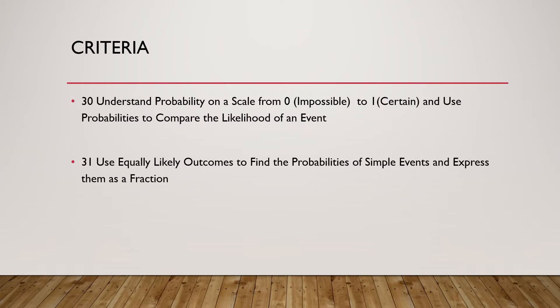NXCL has probability under two areas of criteria: understand probability on a scale from zero to one certain and use probabilities to compare the likelihood of an event, and use equally likely outcomes to find probability of simple events and express them as fractions.